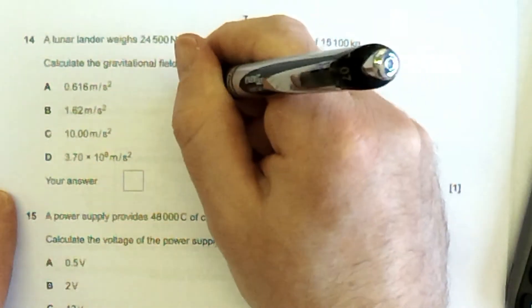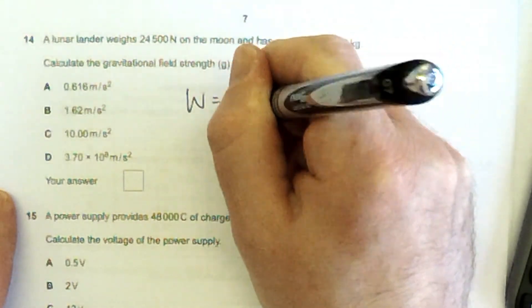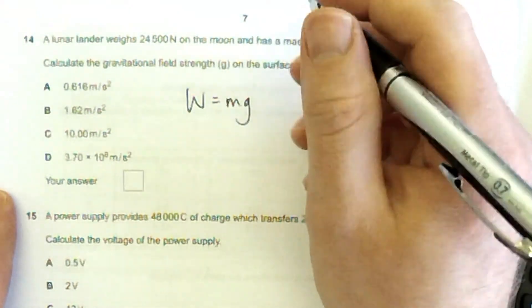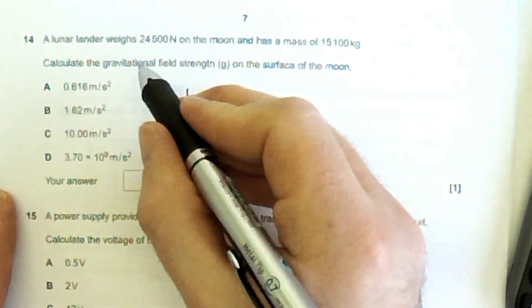Lunar lander weighs 24,500 newtons on the moon and has a mass of 15,100 kilograms. Calculate the gravitational field strength. So, do you remember weight is m times g? Yes, you do. Good. Weight is m times g. That's the weight.